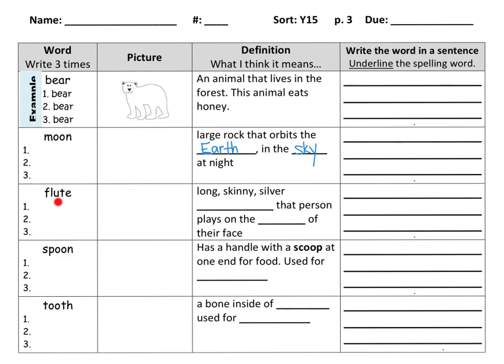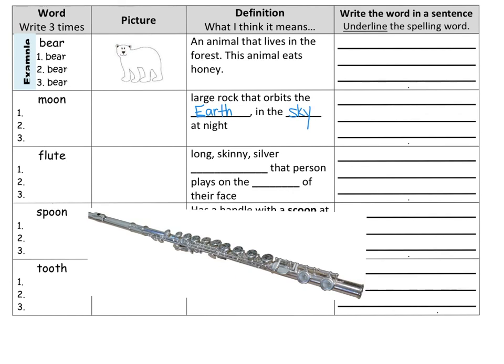This word is flute. Usually the U says the long U sound, but today it says the 'oo' sound — flute. A flute is a long, skinny, silver musical instrument. It's an instrument.